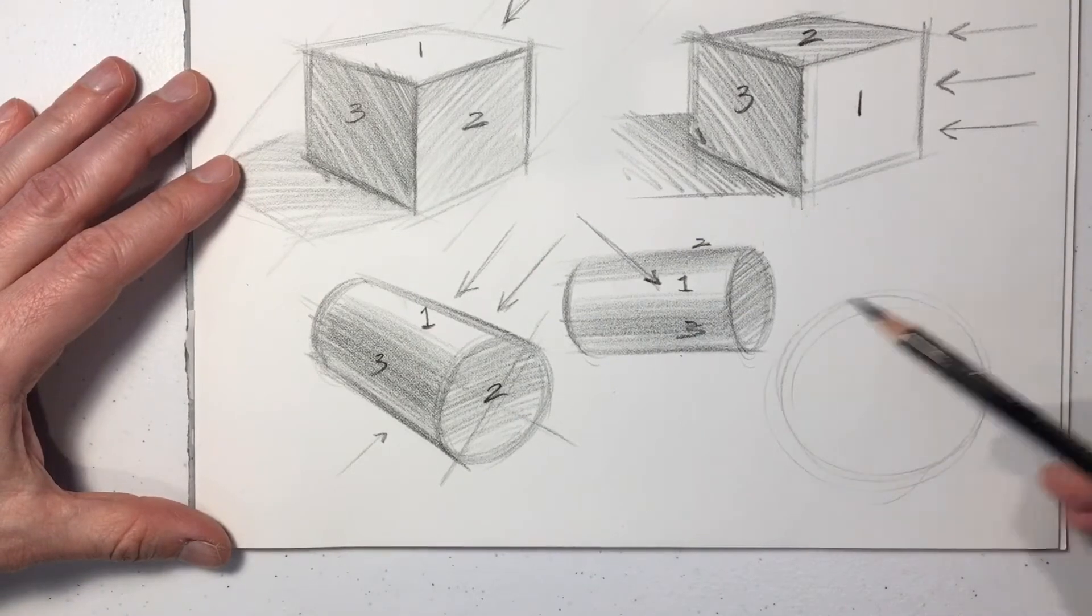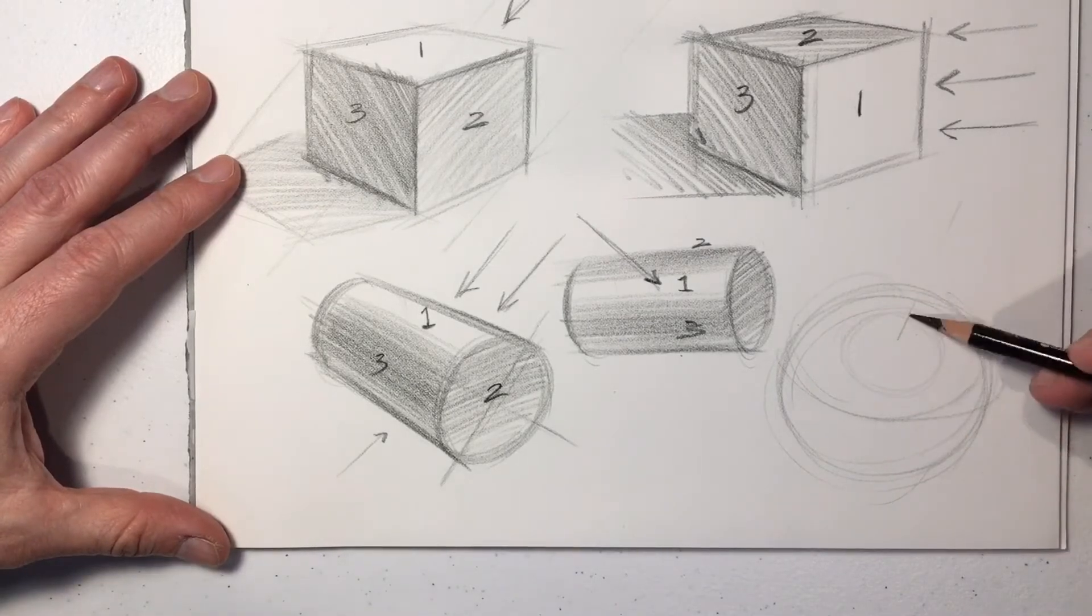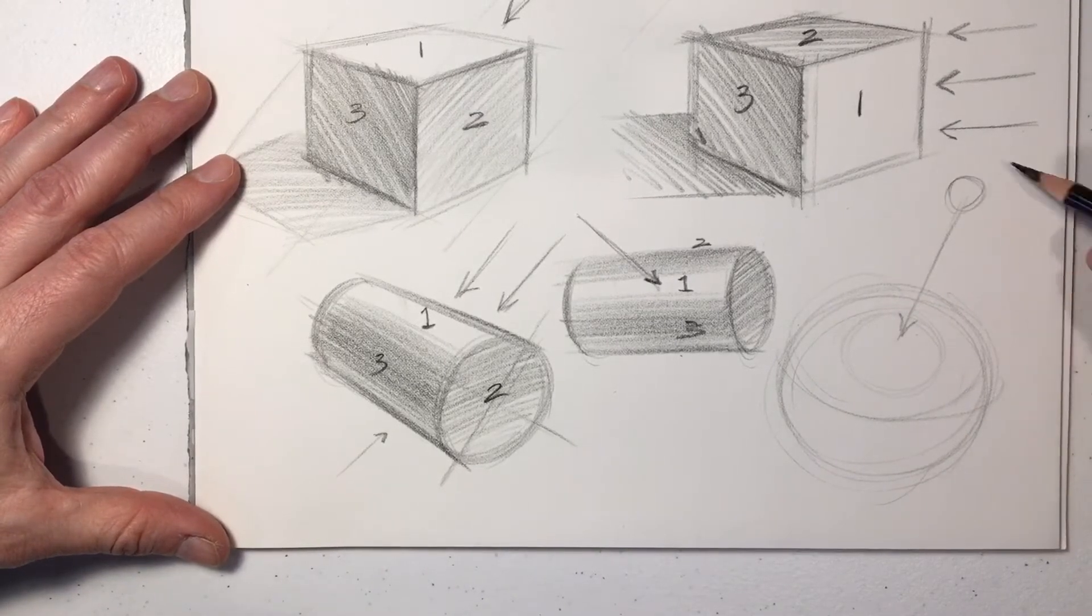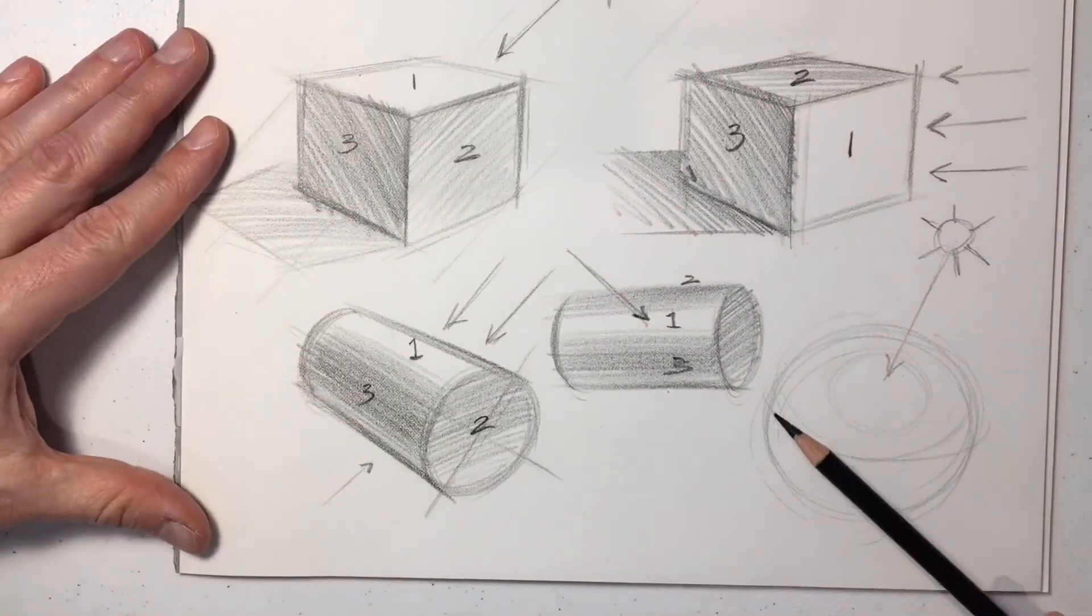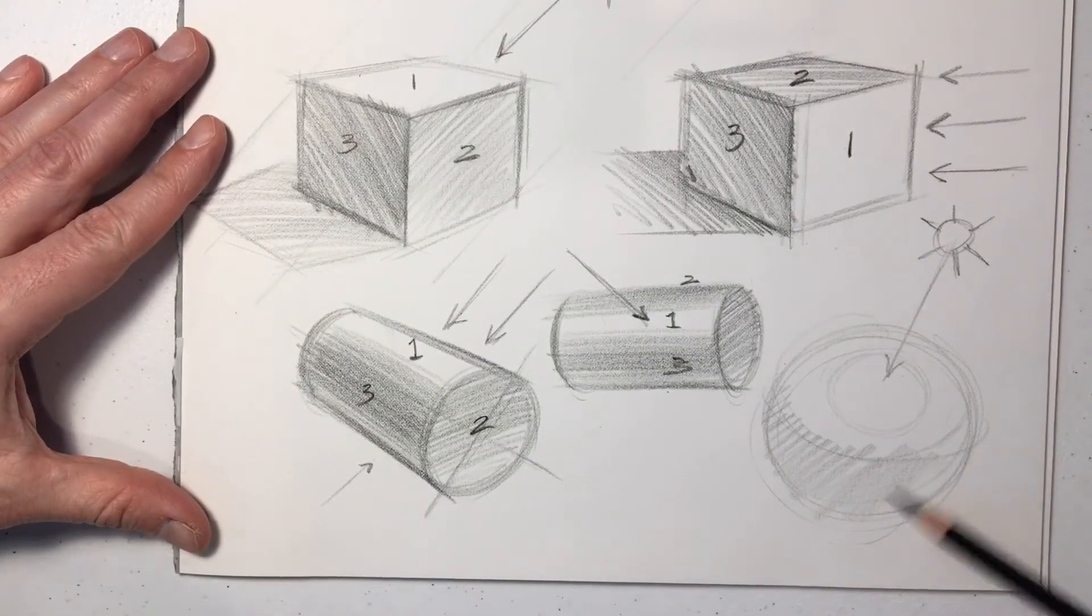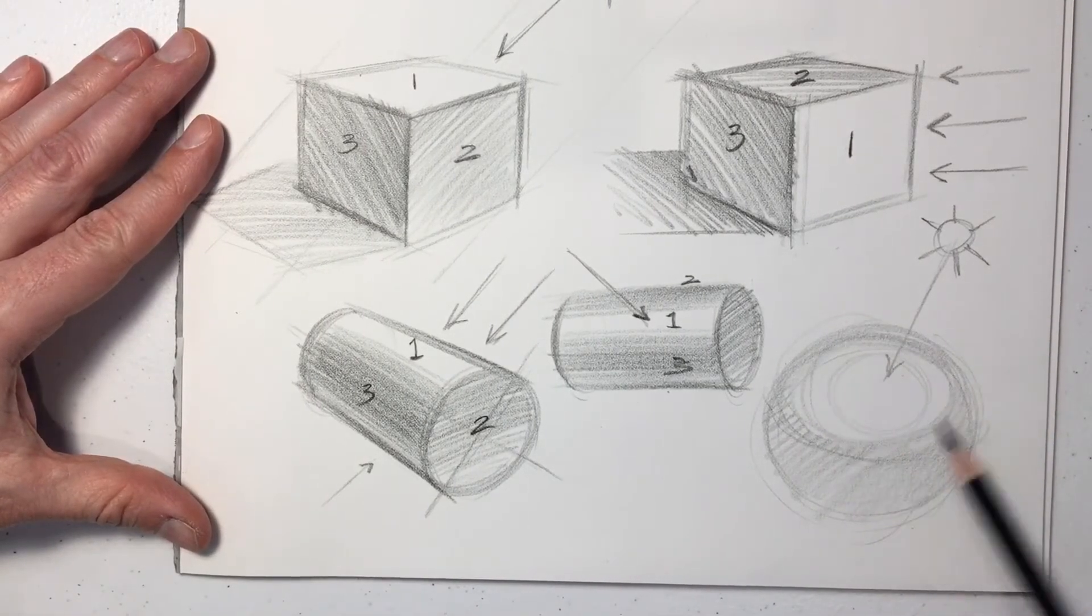And what about a sphere? So here we're going to establish our light source. And that's going to be our number one surface. And everything will be a soft gradation away from that light source.